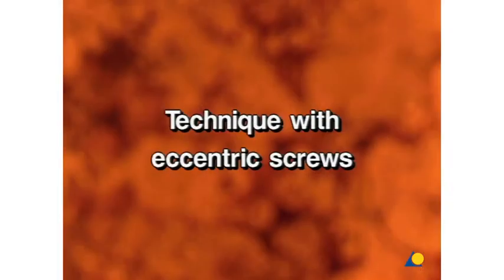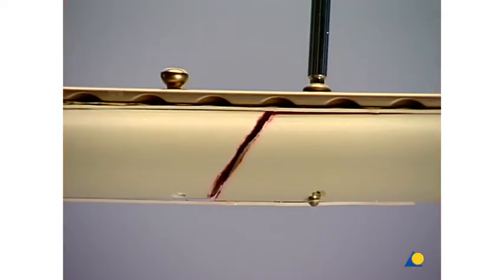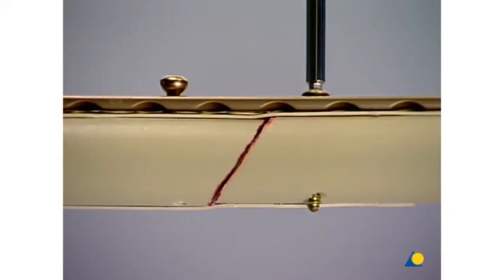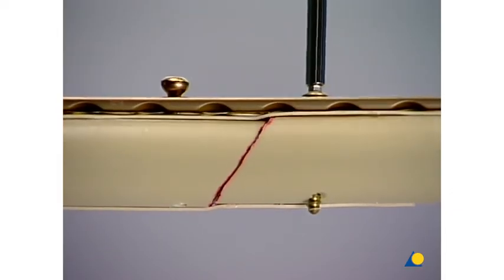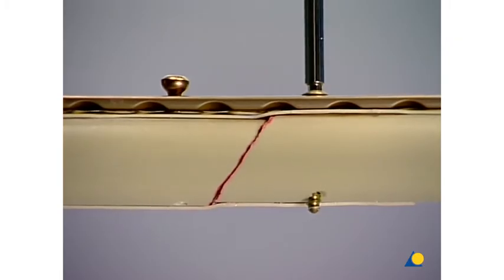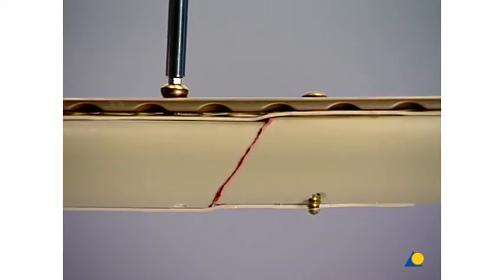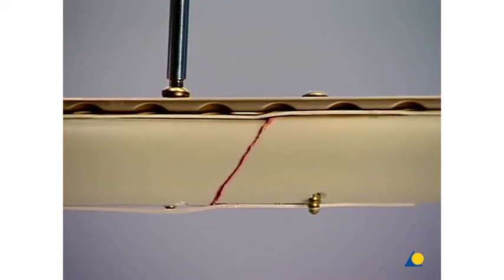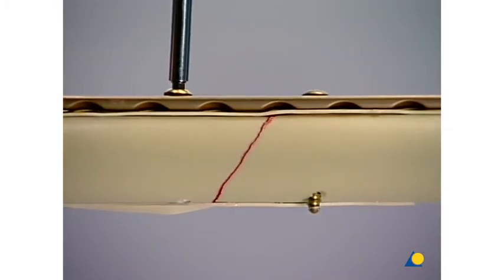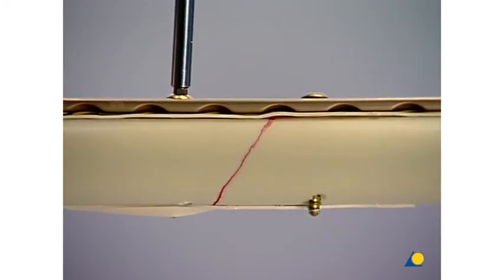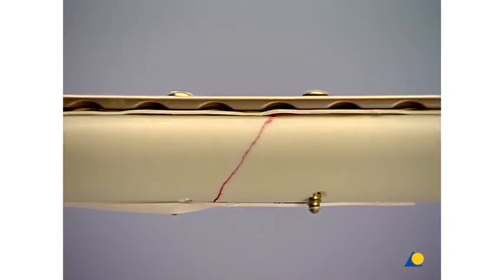Technique with eccentric screws. If a fracture gap should remain after the approximate reduction of a simple shaft fracture, it can be reduced by means of eccentrically inserted screws. This technique only allows manipulation coaxial to the longitudinal axis of the plate or the bone. The maximum reduction distance is limited to 4mm. In cases where larger reductions are necessary, we recommend using either a tension device or the pull technique with the bone-holding forceps.